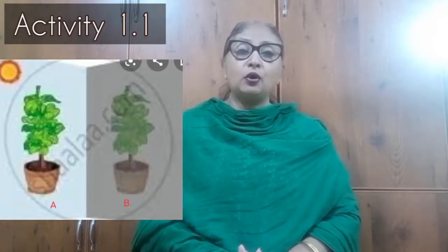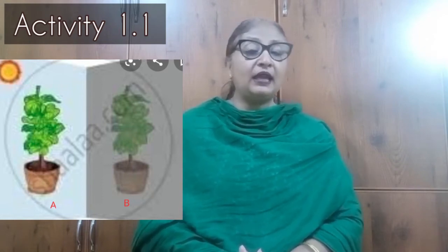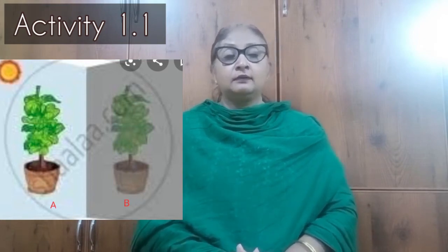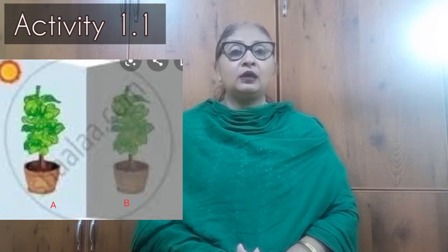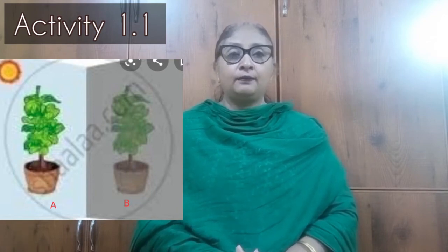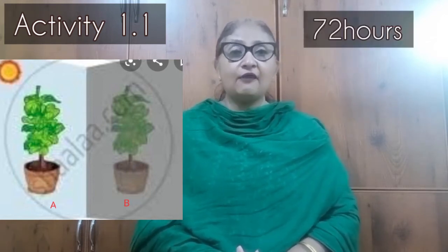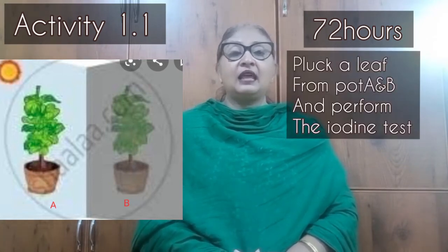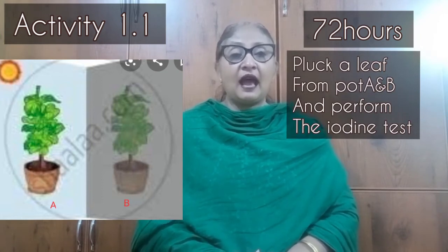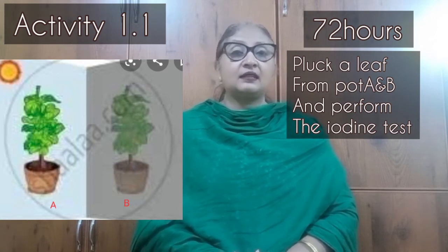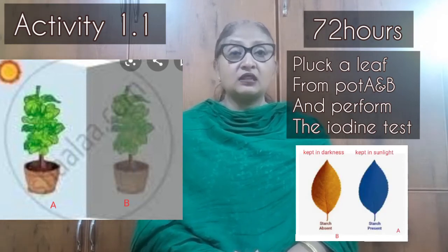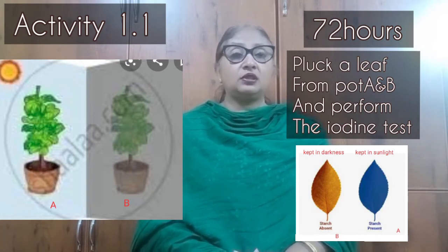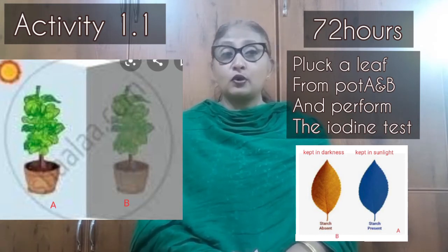Let us now discuss Activity 1.1. We need to take two potted plants and label them as A and B. Keep pot A in sunlight and pot B in darkness for 72 hours. After 72 hours, pluck a leaf from each pot and perform the iodine test. The leaf from pot A changes color and becomes blue-black, indicating the presence of starch — meaning photosynthesis has occurred. The leaf from pot B does not show any color change because starch is absent, meaning photosynthesis has not occurred.